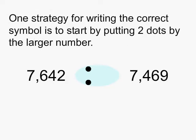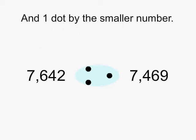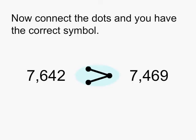One strategy for writing the correct symbol is to start by putting two dots by the larger number, one dot by the smaller number, then connect your dots to get the correct symbol. We will read this starting with the number on the left and going across, just like you do when you're reading a book.